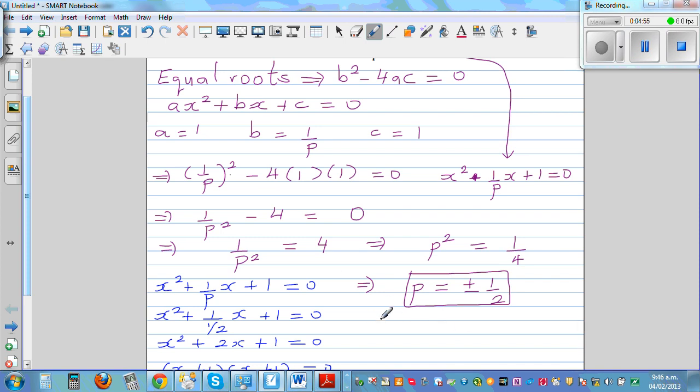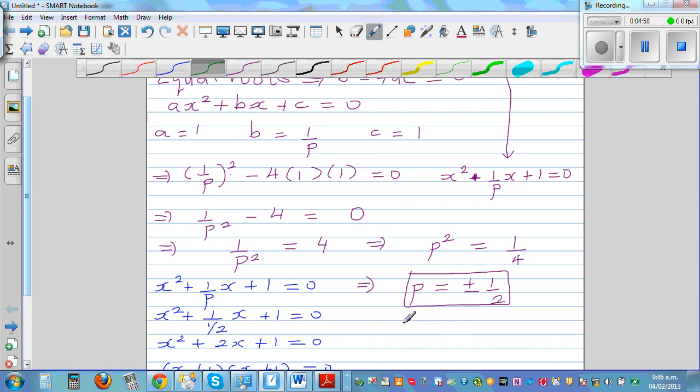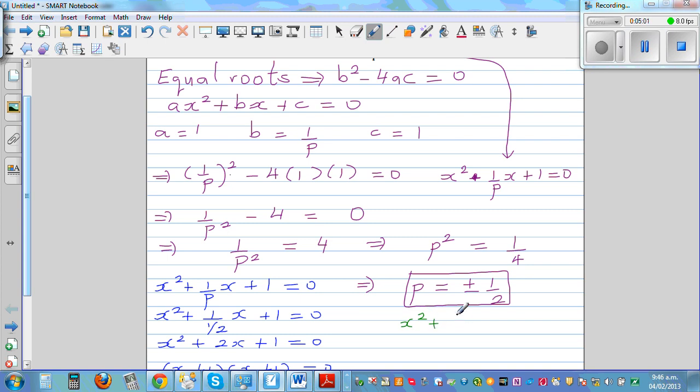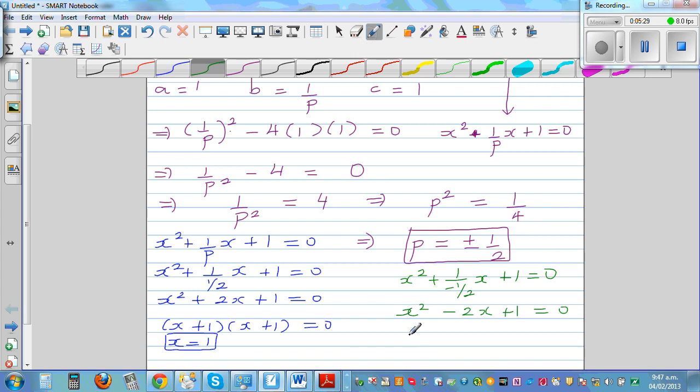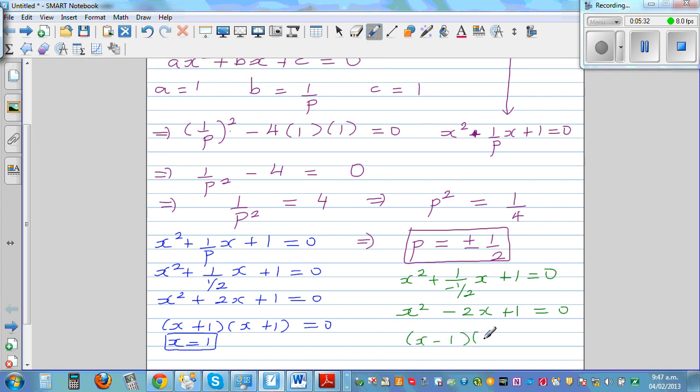Now if you put x as negative half, this will become x squared plus 1 over negative half x plus 1 equal to 0. So this means this is x squared minus 2x plus 1 is equal to 0. So when you factorize this, this is x minus 1 times x minus 1 is equal to 0. So you have only one root.